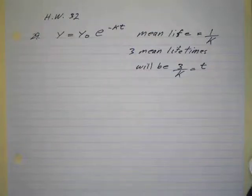Okay, the last one, homework 32 is number 29. So we'll take a look at this. It says physicists using the radioactive decay equation y equals y sub 0 e to the negative kt, which I wrote, call the number 1 over k the mean life of a radioactive nucleus.